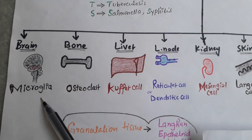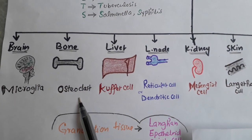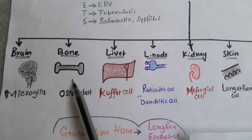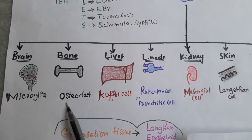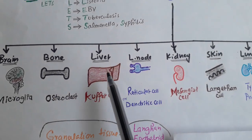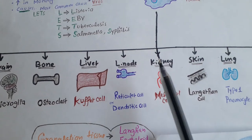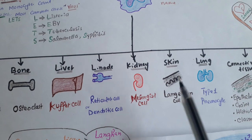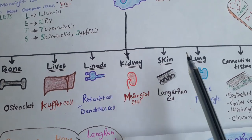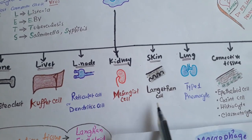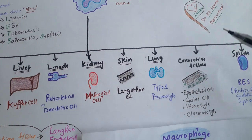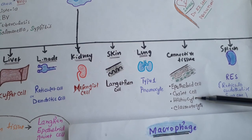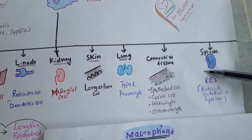In the brain, we call it microglia. In bone, we call it osteoclast — 'clast' means cutting, so they cut the bone, and that's why the macrophage of bone is called osteoclast. In the liver, the macrophage is called Kupffer cell. In the lymph node, it is called reticular cell or dendritic cell. In the kidney, it is called mesangial cell. In skin, it is called Langerhans cell. In the lung, it is called type pneumocytes. In connective tissue, we call it epithelioid cells, giant cell, histiocytes, and clasmatocytes.